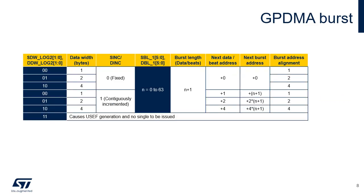This table lists the main characteristics of a GPDMA burst. A source and destination burst is programmed with a burst length defined by the fields SBL1 and DBL1 respectively, and a data width defined by the fields SDW-Log2 and DDW-Log2 respectively, in the GPDMA CXTR1 register. Programming SDW-Log2 or DDW-Log2 with the binary value 1-1 leads to a user setting error. The addressing mode after each data beat of a GPDMA burst is defined by SINC and DINC for source and destination respectively, either fixed or incremented addressing. The start and next addresses must be aligned with the respective data width.